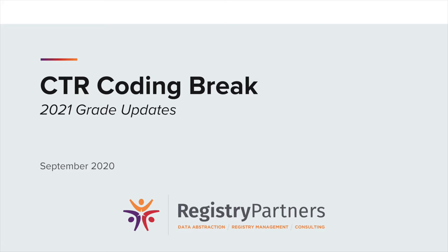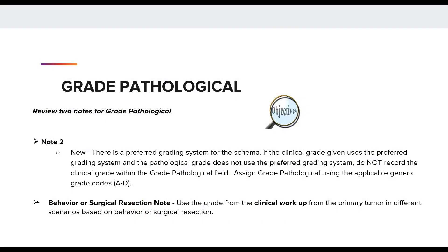I'm going to go over the objectives for today's presentation. It is to review two new notes for coding the data field grade pathological from the 2021 grade update. I do want to emphasize that I am nearly touching the surface with all the grade changes for 2021. I chose to focus on two new notes specific for grade pathological, but there are additional new notes and specific grade table clarification, so please refer to all the notes within the site-specific schemas.